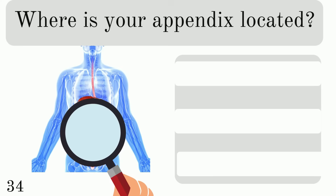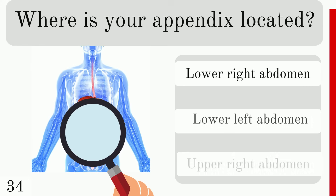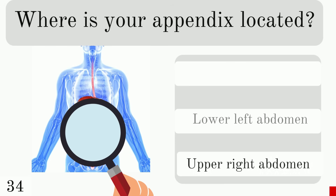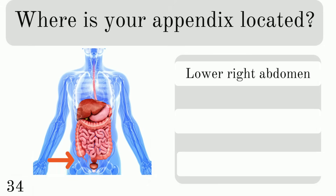Where is your appendix located: in the lower right abdomen, lower left abdomen, or upper right abdomen? The correct answer is the lower right abdomen.